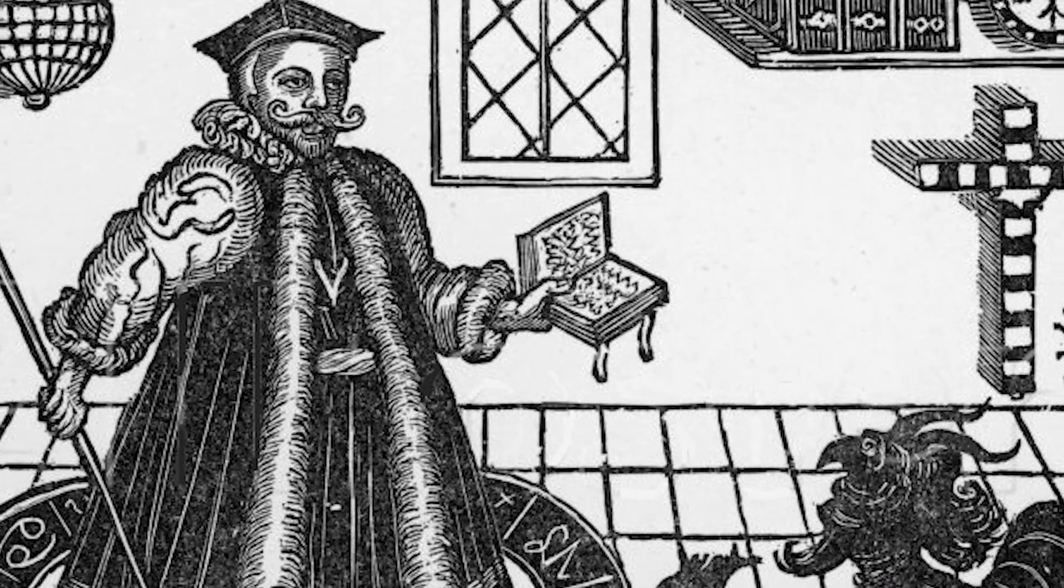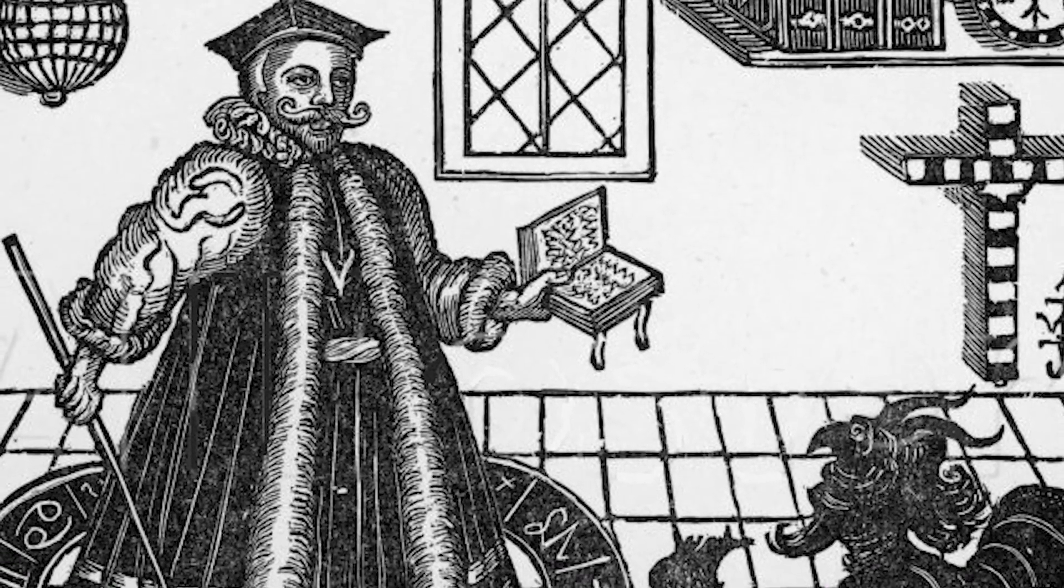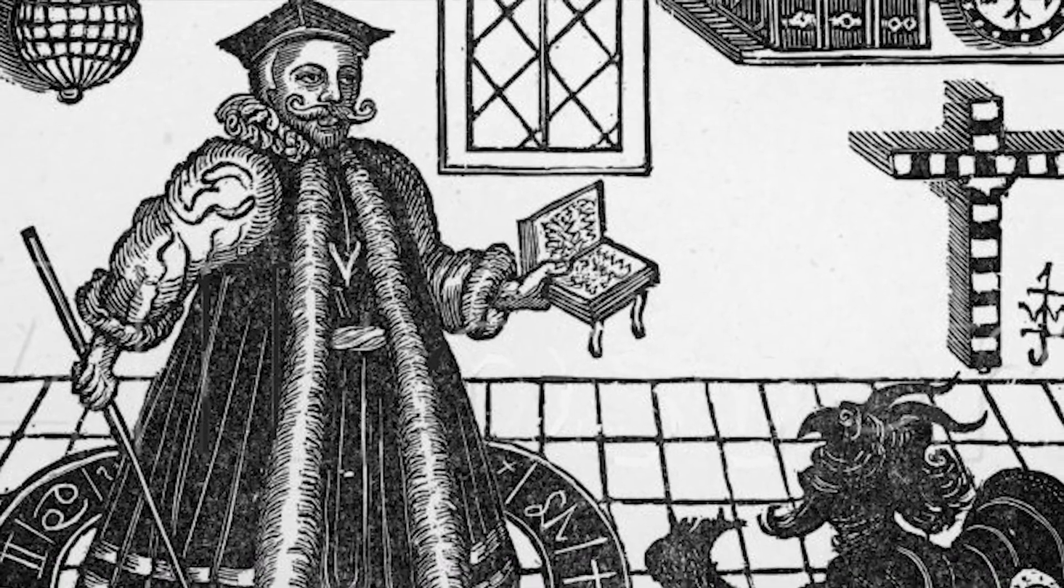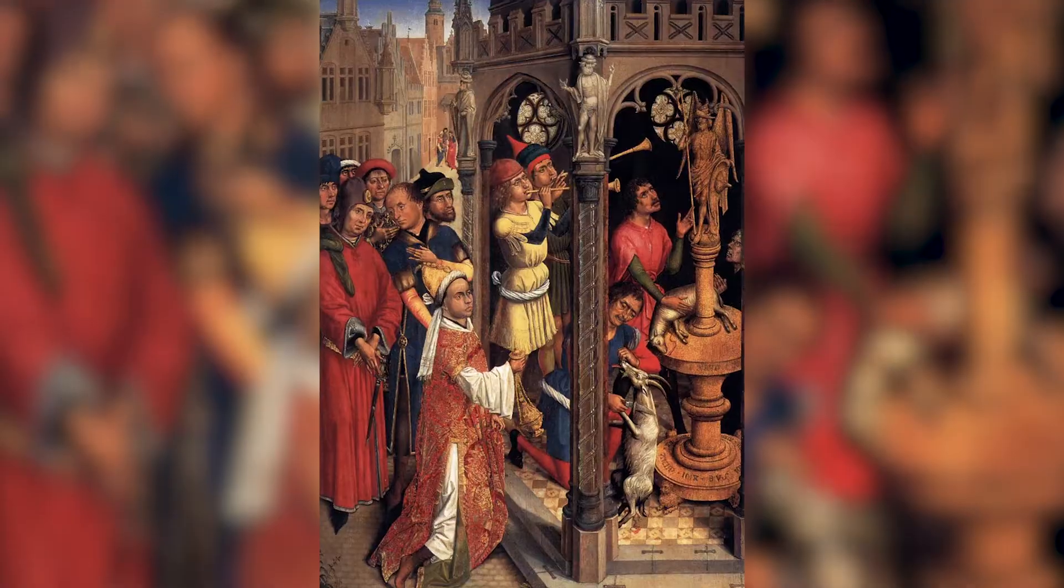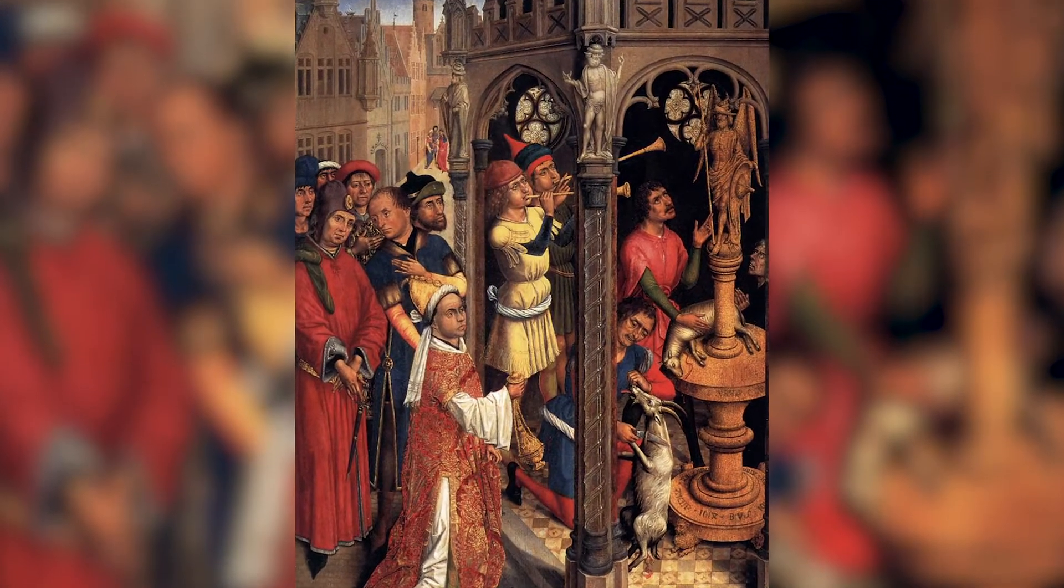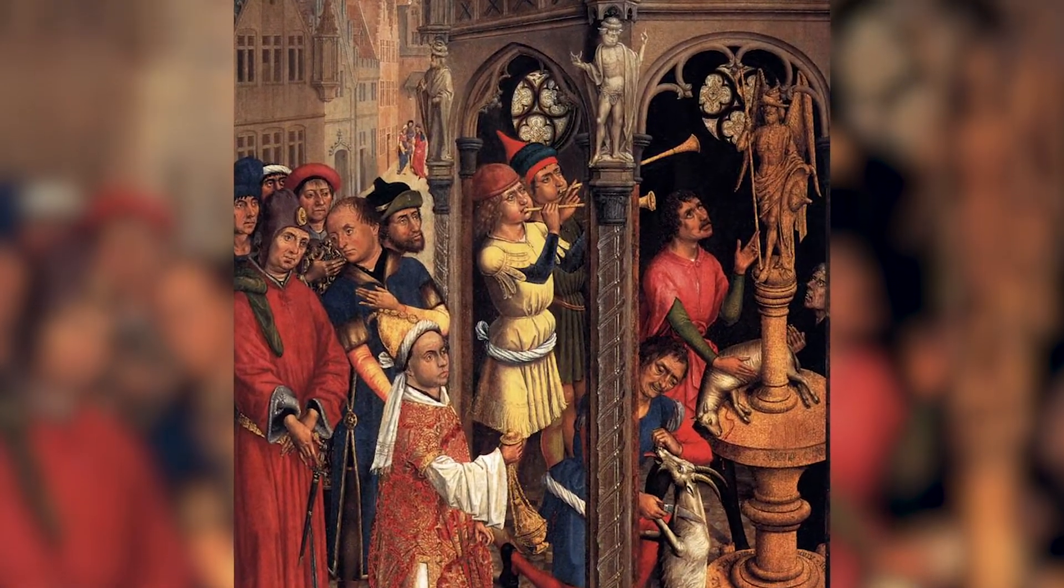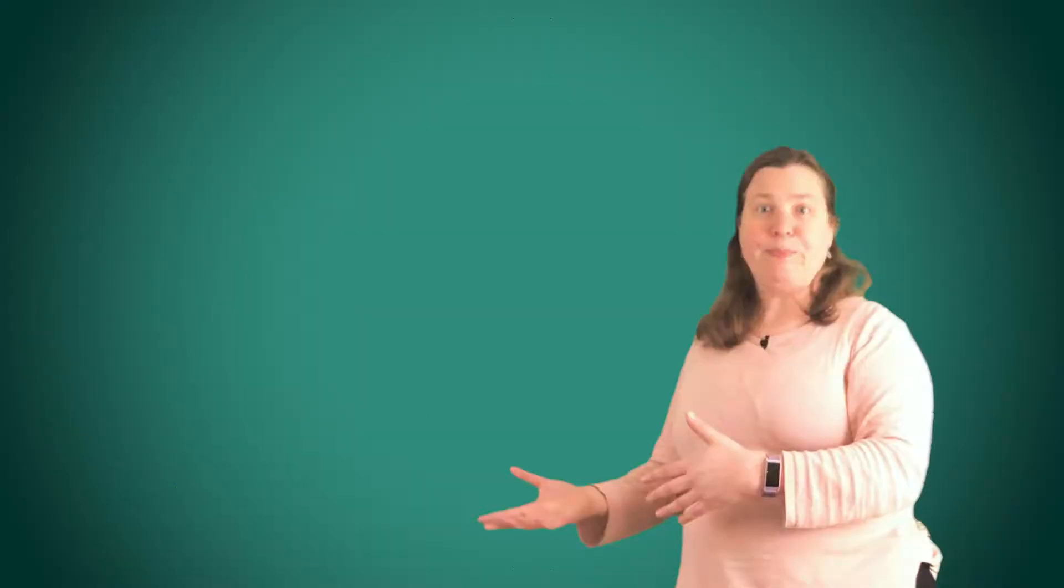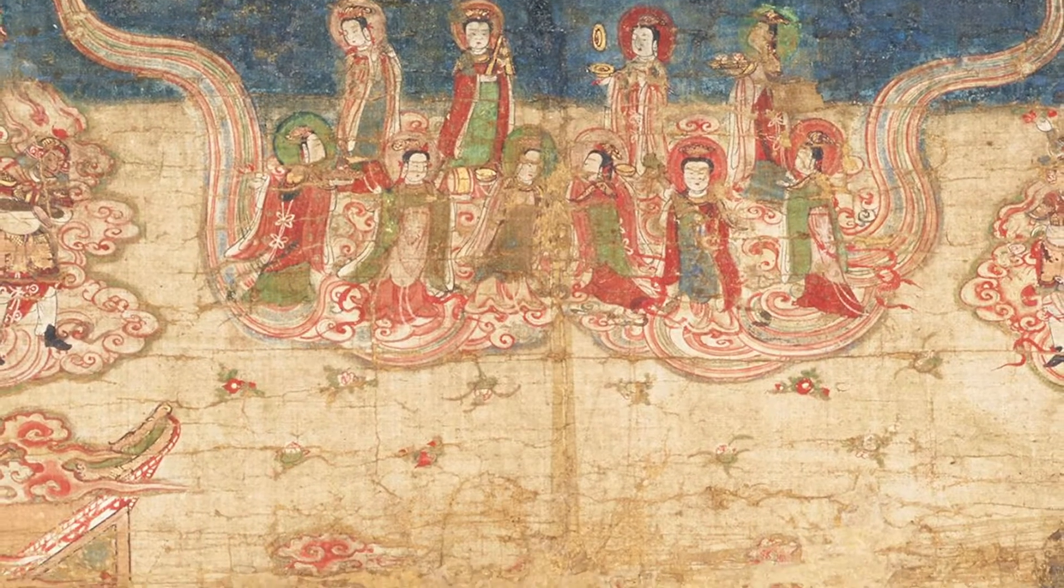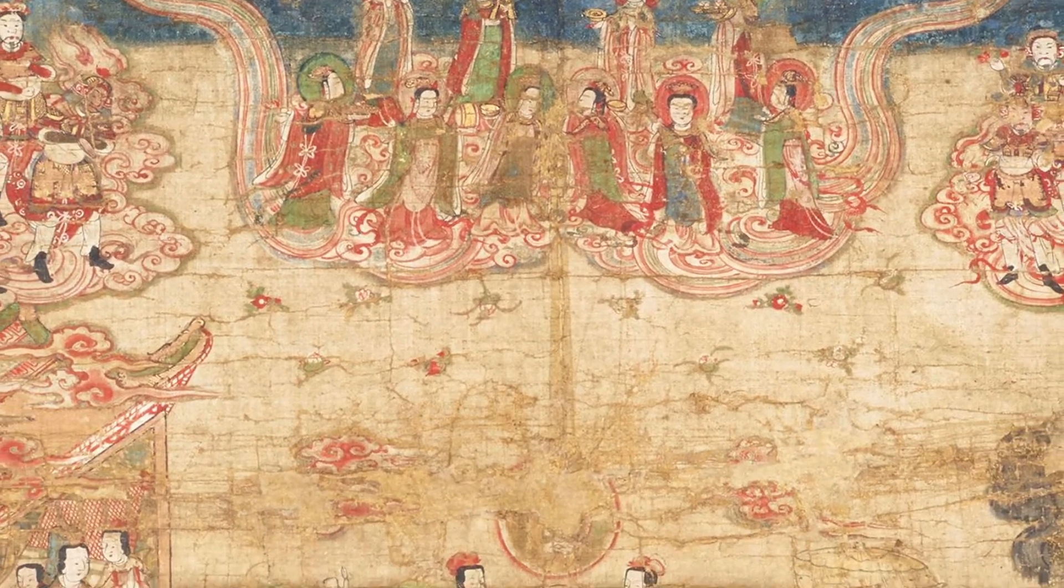In 373, at the age of 18, he became a hearer or an auditor of the dualist Manichaeism religion. For nine years, he continued in this faith before questioning the Manichaean teaching about the nature of evil drove him to reject the Manichaeans and seek truth elsewhere. Manny, who it's named after, was born in Babylon, aka Persia, in 216.